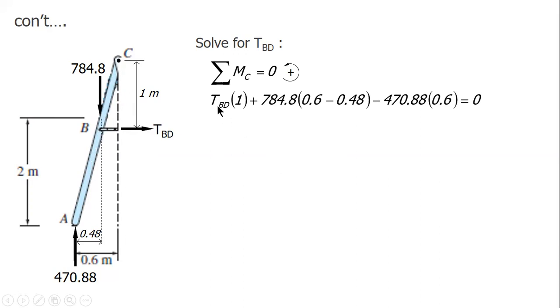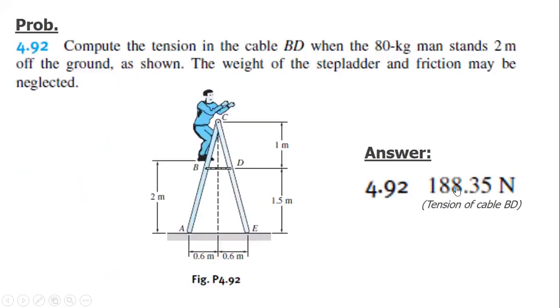This is the equation: TBD tension of BD times 1 plus 784.8 times the moment arm or perpendicular distance of the weight to point C, which is 0.6 minus 0.48 or simply 0.12, minus clockwise moment of RA times moment arm of 0.6. TBD is equal to 188.352 newtons. If you check, we have 188.35 newtons.